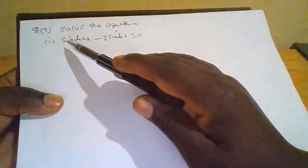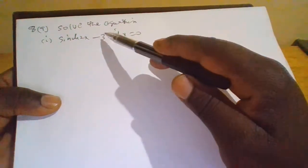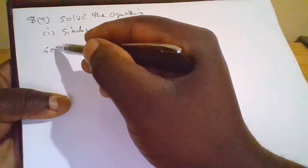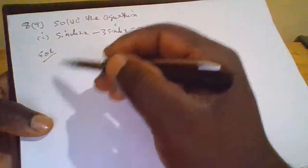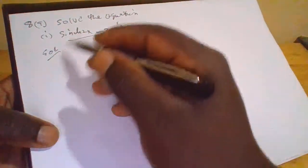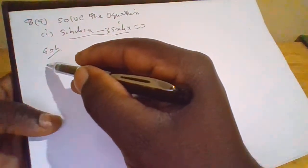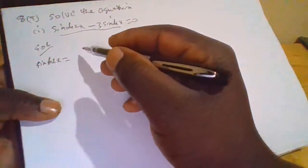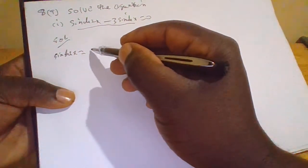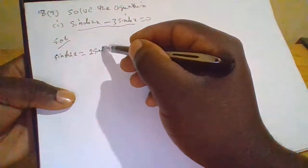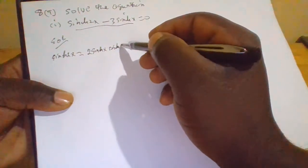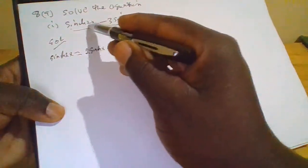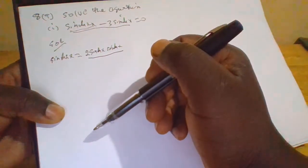Let's solve the equation sin(2x) minus 3 sin(x) equals 0. Now for us to solve this equation, first of all we shall write that sin(2x) is the same as 2 sin(x) cos(x). So we shall replace sin(2x) by 2 sin(x) cos(x).